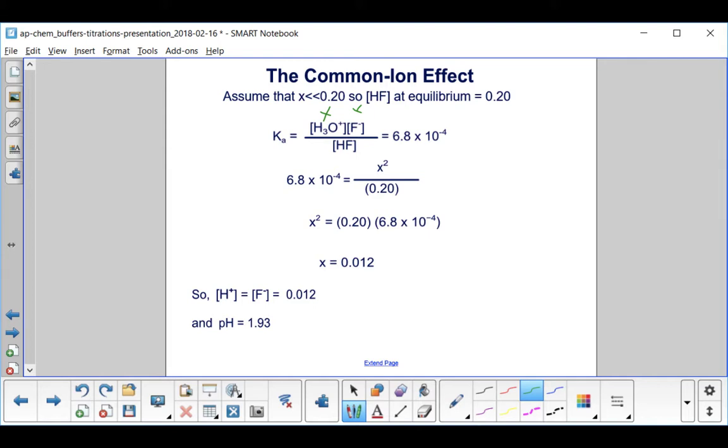From here, we just solve for X, and we get 0.012. We have to remember what does X equal? We set X equal to the concentration of both the hydrogen ion H3O plus and the fluoride ion F minus, and then we can find the pH. Remember that pH is the negative log of the hydrogen ion concentration. The negative log of 0.012 gives us a pH of 1.93.